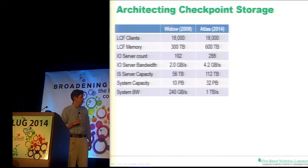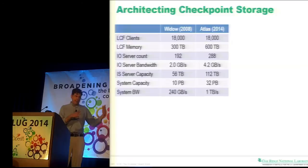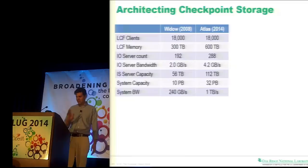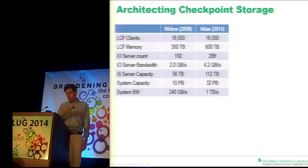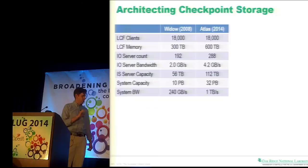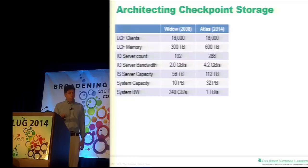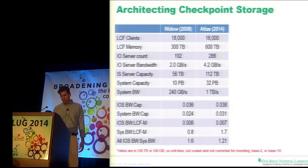I took the two previous systems — Widow/Jaguar and Atlas/Titan. Both have 18,000 clients. Titan is an upgrade adding GPUs and RAM. For the Jaguar system you have 300 terabytes of RAM. We had 192 servers for Widow/Spider, 10 petabytes total capacity, 240 gigabytes per second. Moving to Atlas, we increased IO servers by 50% and storage capacity per server by 50%, getting a tripling in system capacity but a quadrupling in actual system bandwidth. So efficiency along that axis is improving.